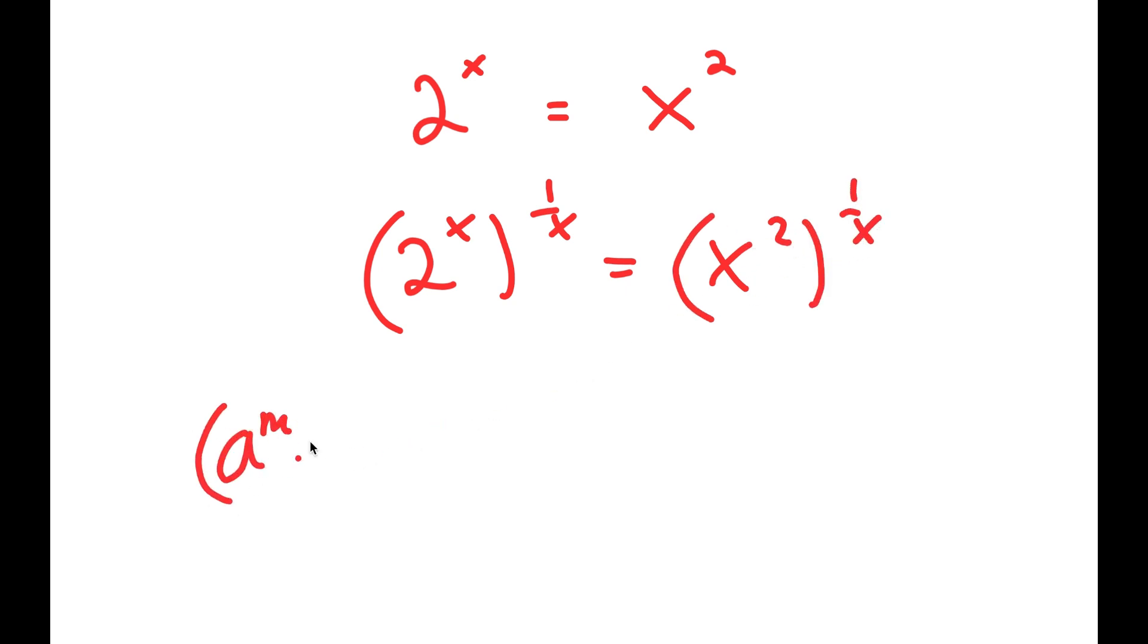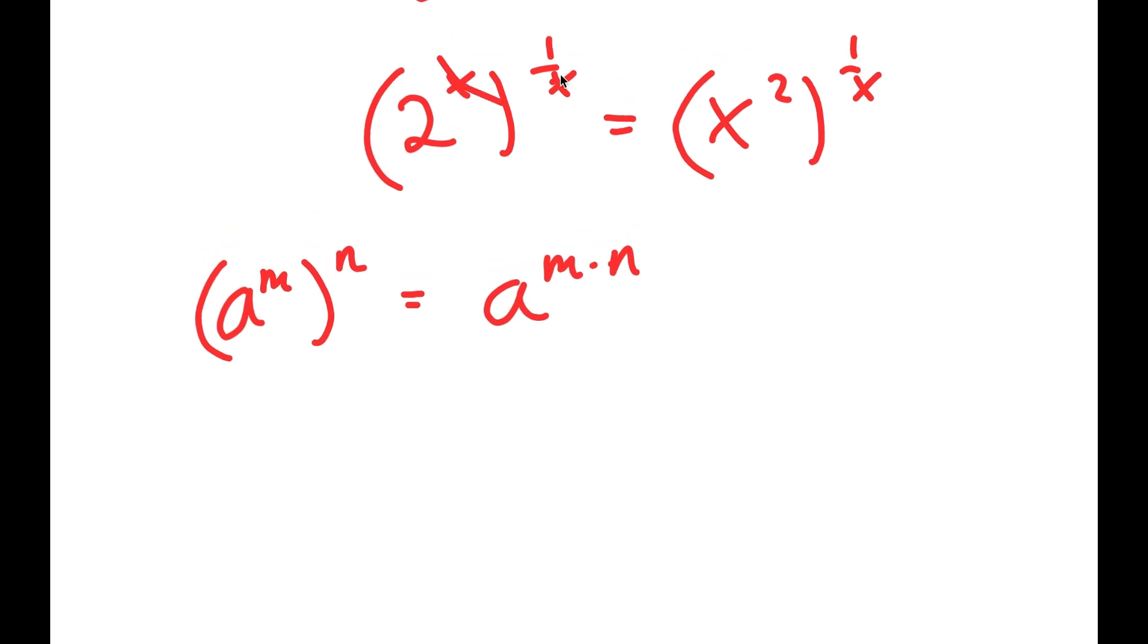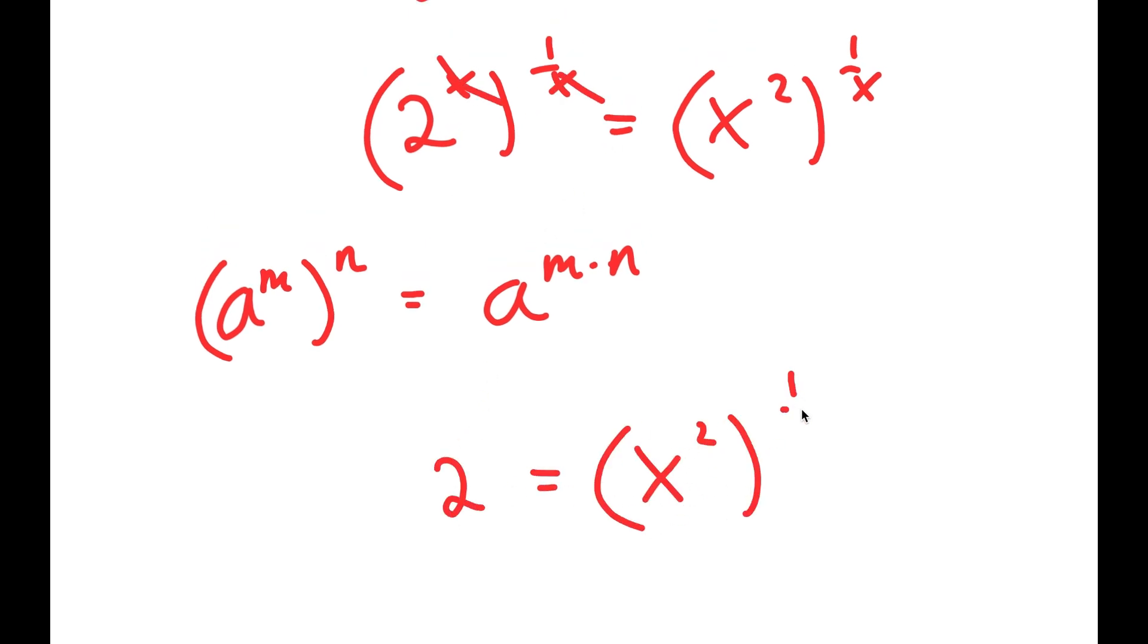Now, if I have a to the power of m to the power of n, this is equal to a to the power of m times n. So now these two cancel out, and I get 2 is equal to x squared to the power of 1 over x.